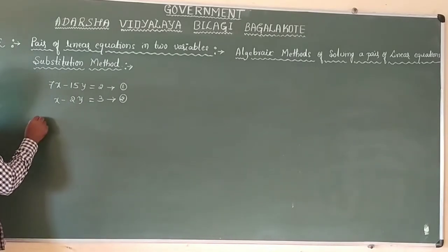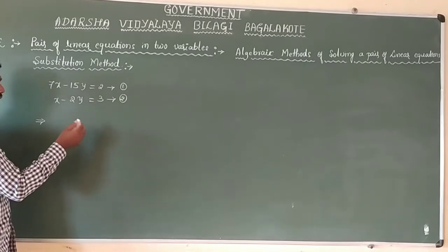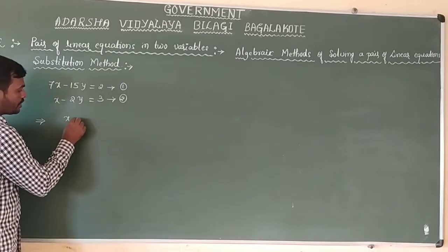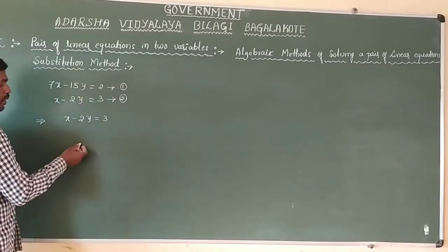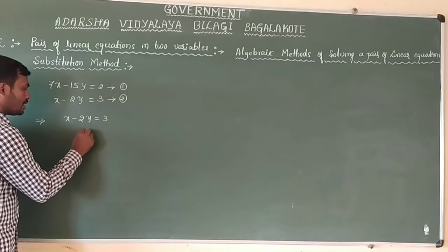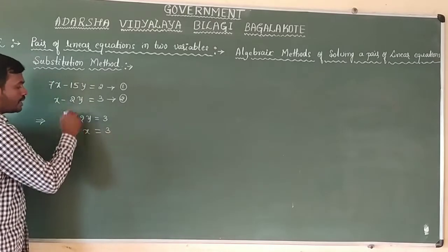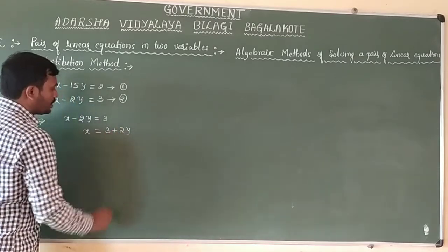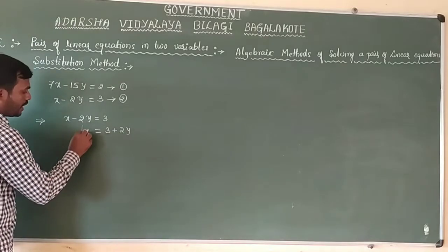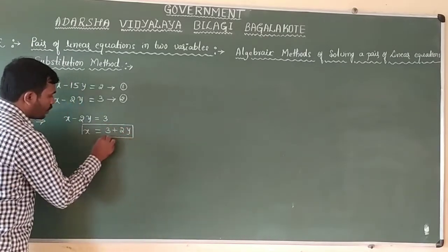I will solve equation number 1 for any one of the variables — specifically, I will solve this equation for the value of x. The given equation is x minus 2y equals 3. If I solve it for x, then x equals 3 plus 2y, by taking minus 2y to the other side where it becomes plus 2y.